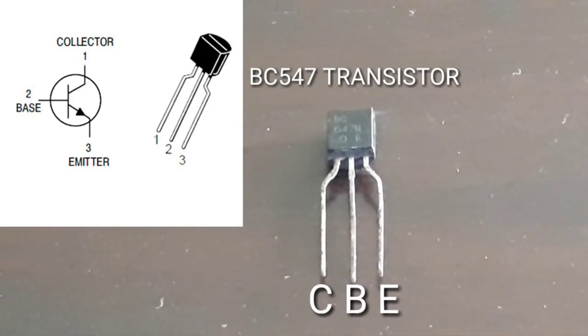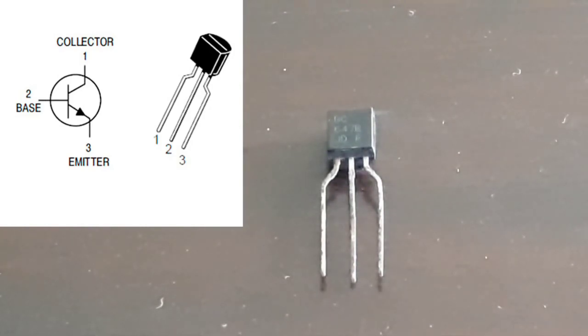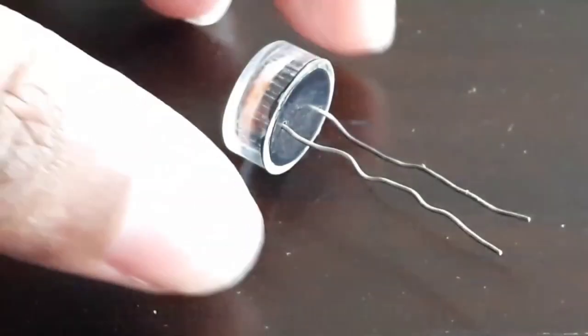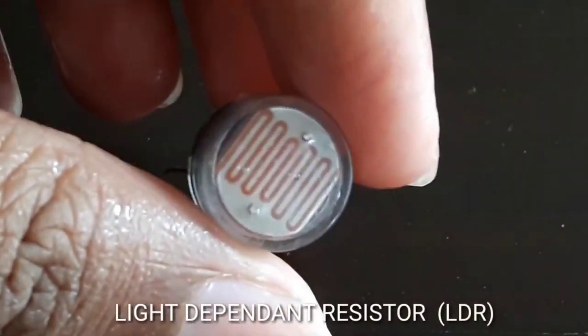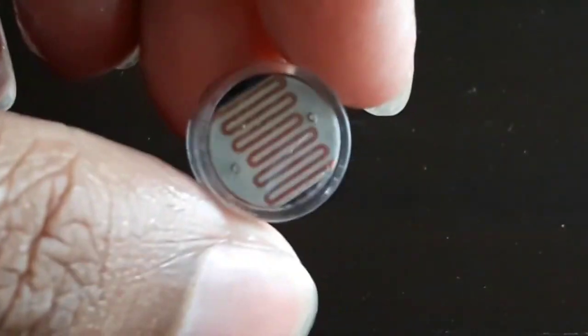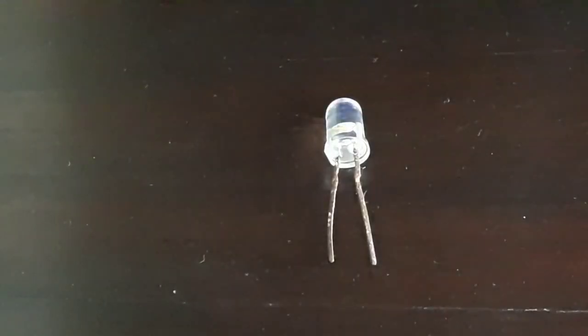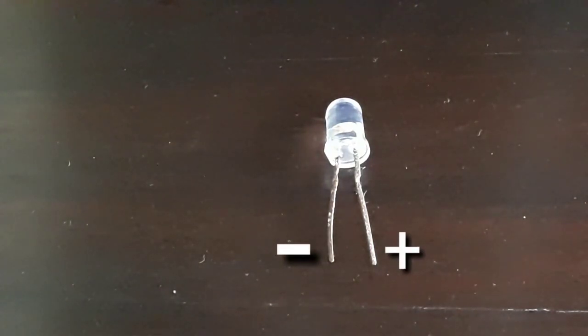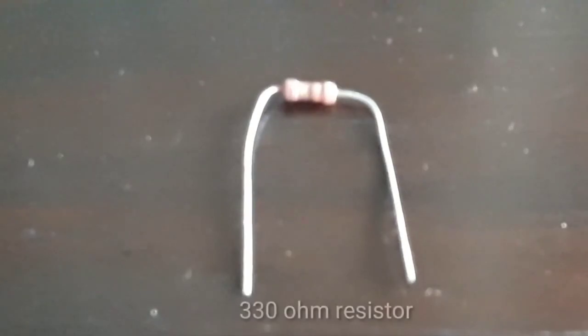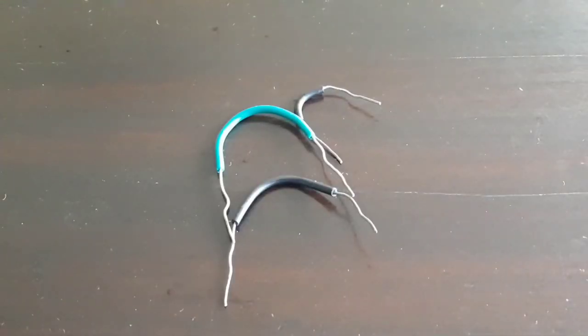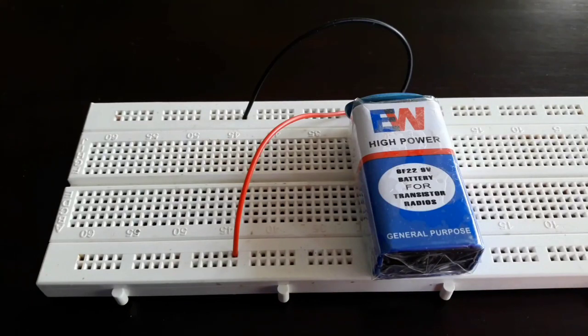You need a LDR which is known as light dependent resistor, you need a LED light emitting diode. You also need a 330 ohm resistor, some wires, a 9-volt battery, and a breadboard.